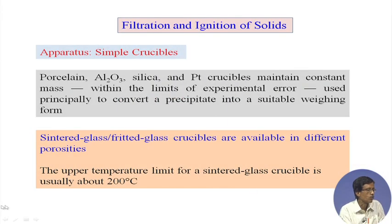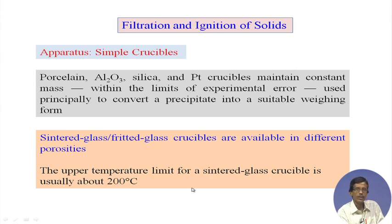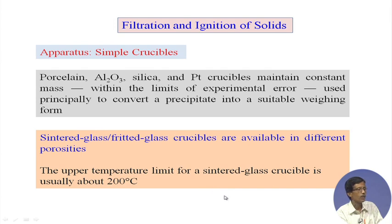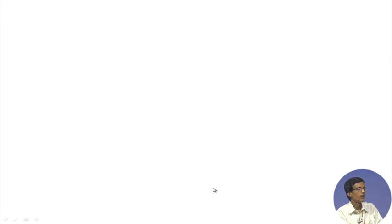This sintered glass crucible is useful up to 200°C. When we use it for drying nickel DMG or aluminum oxinate, we use it up to 120°C, but for some other cases with non-aqueous solvents, if we heat in the range of 150–160°C we can still use the sintered glass crucible for that purpose.